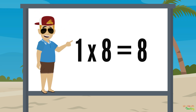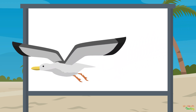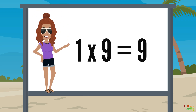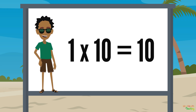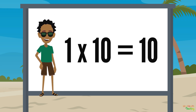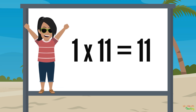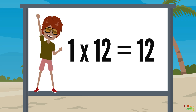One times eight equals eight. One times nine equals nine. One times ten equals ten. One times eleven is eleven. One times twelve equals twelve.